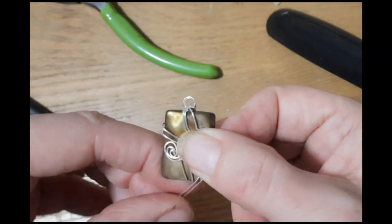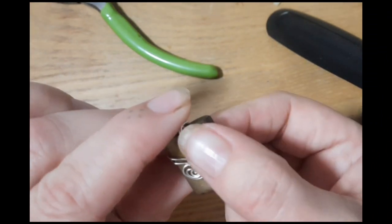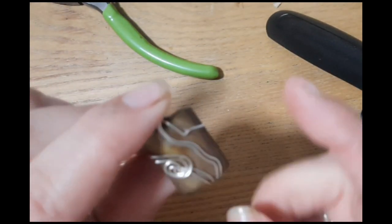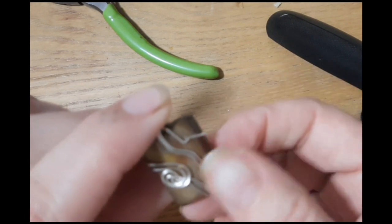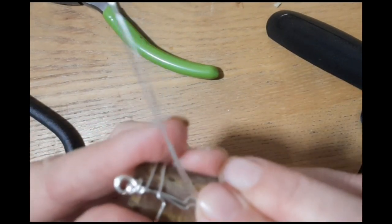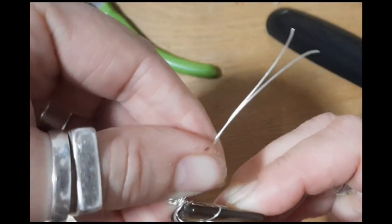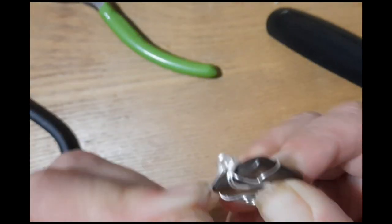So I'll bring that up over the back. I've just put a few little curves in that bit, and I'll bring it up the back and again wrap it around the hoop at the top.